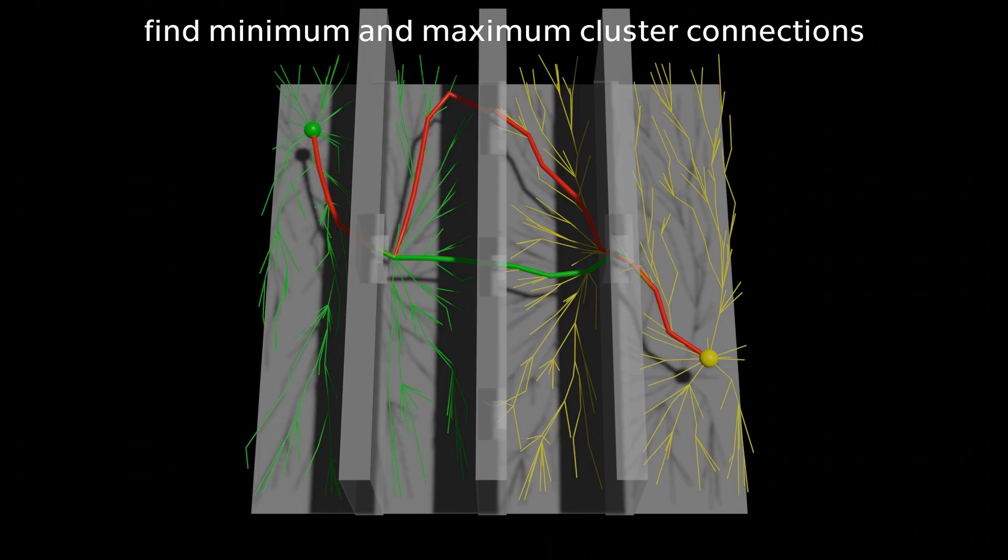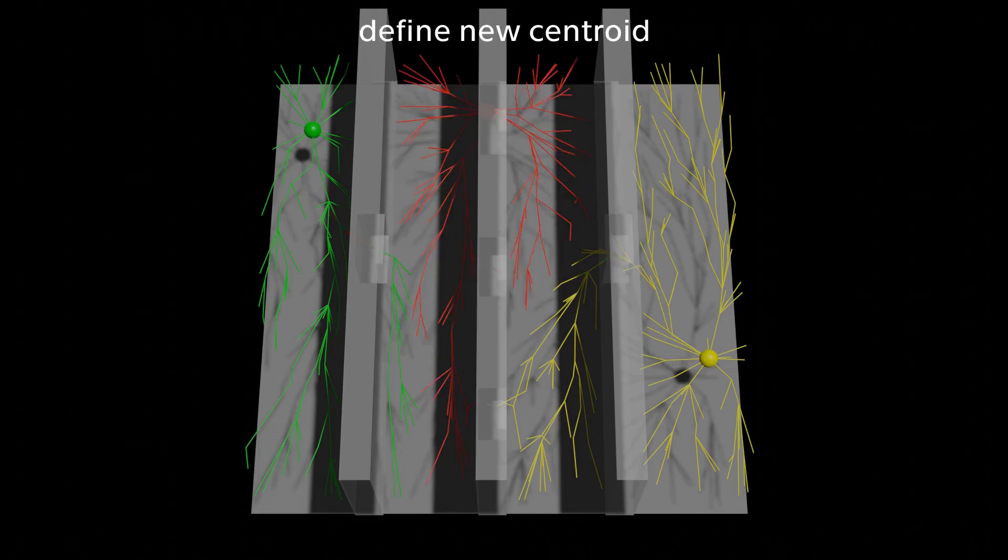If these two paths cannot be deformed without collisions into each other by point translation, one of the bordering nodes is selected as a new cluster centroid. Roadmap is then reclustered.